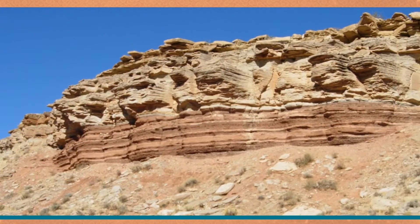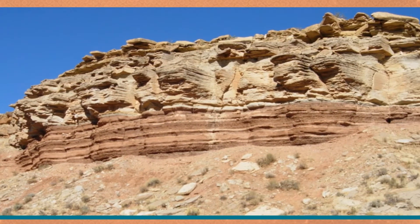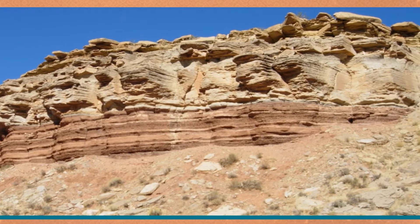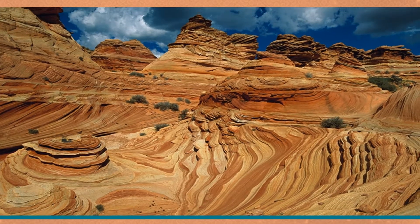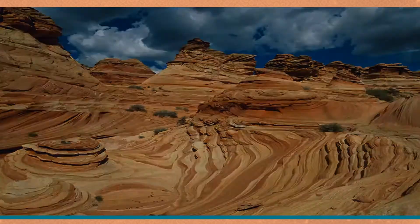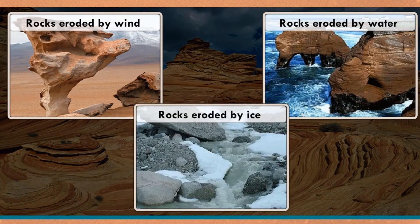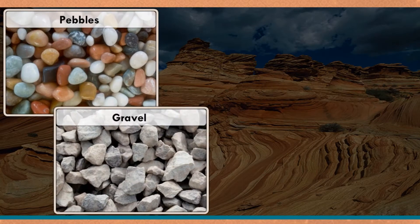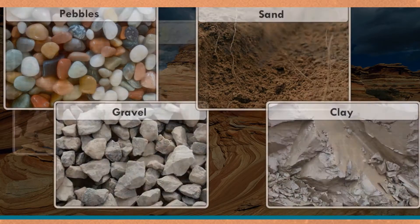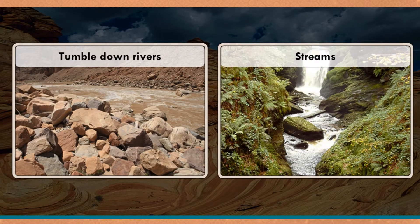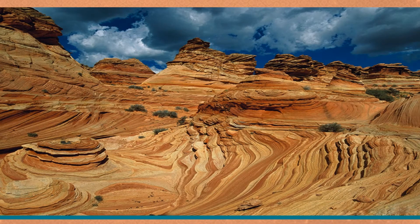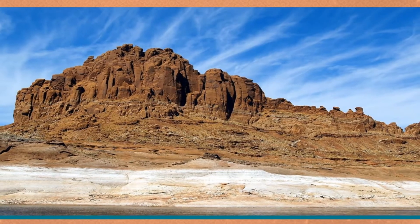The earth's surface is constantly being eroded, meaning that rocks are broken up into smaller pieces by wind, water, and ice. These small pieces of rock turn into pebbles, gravel, sand, and clay, and tumble down rivers and streams. They pile up in thick layers on the bottom of water bodies. Over a long period of time, the pieces become pressed together and form solid rock called sedimentary rock.